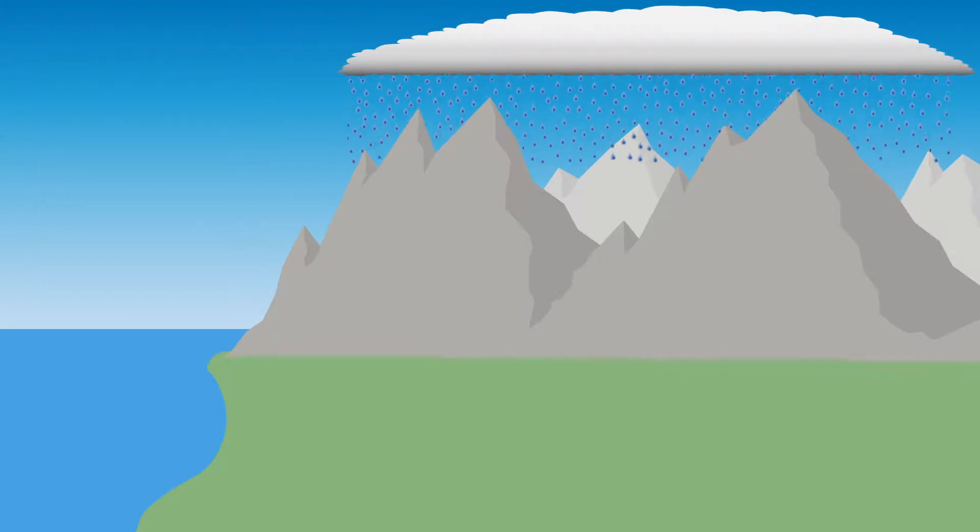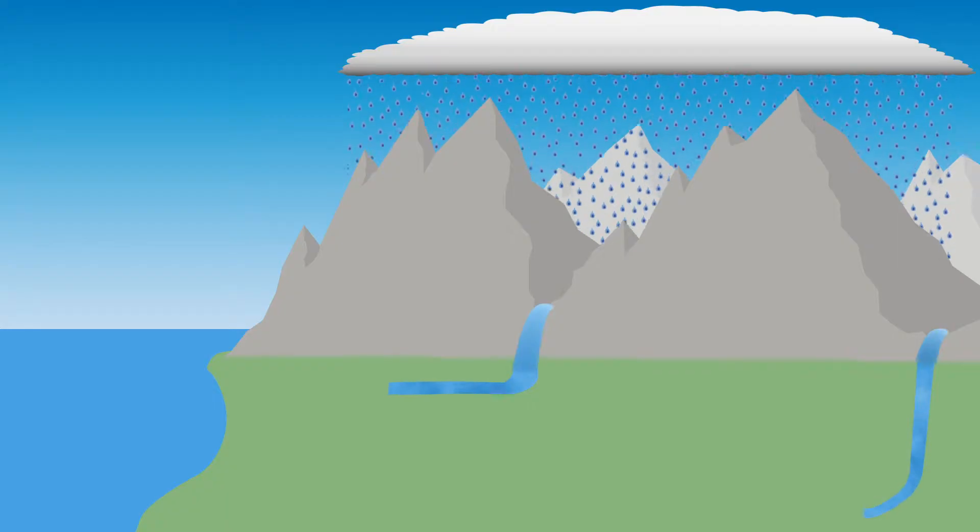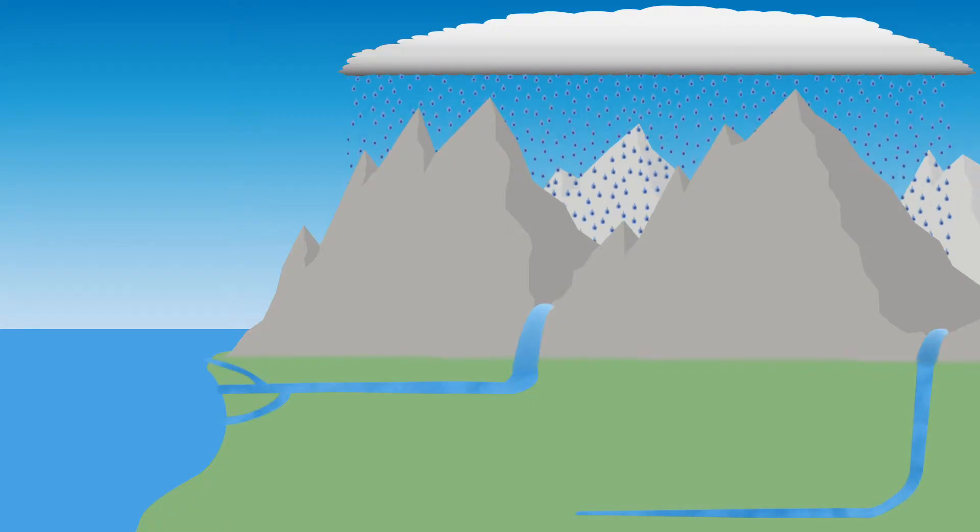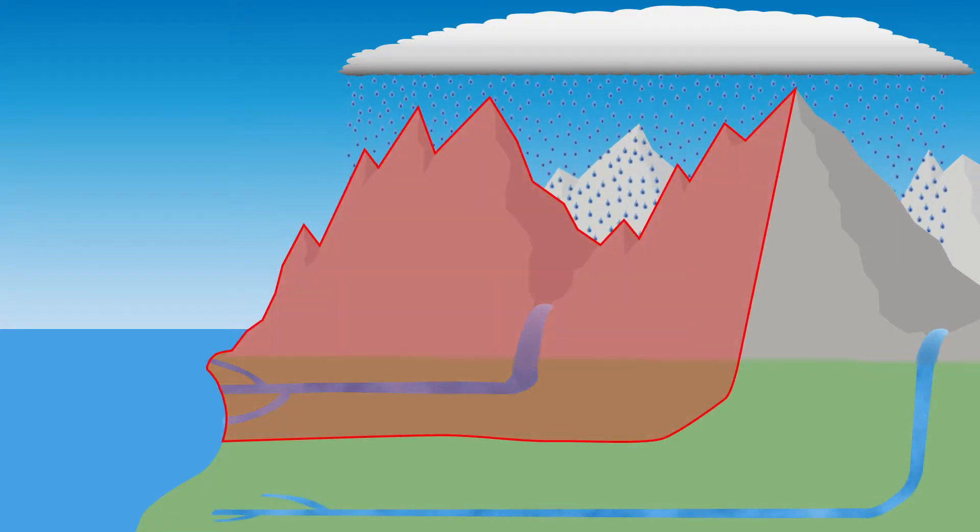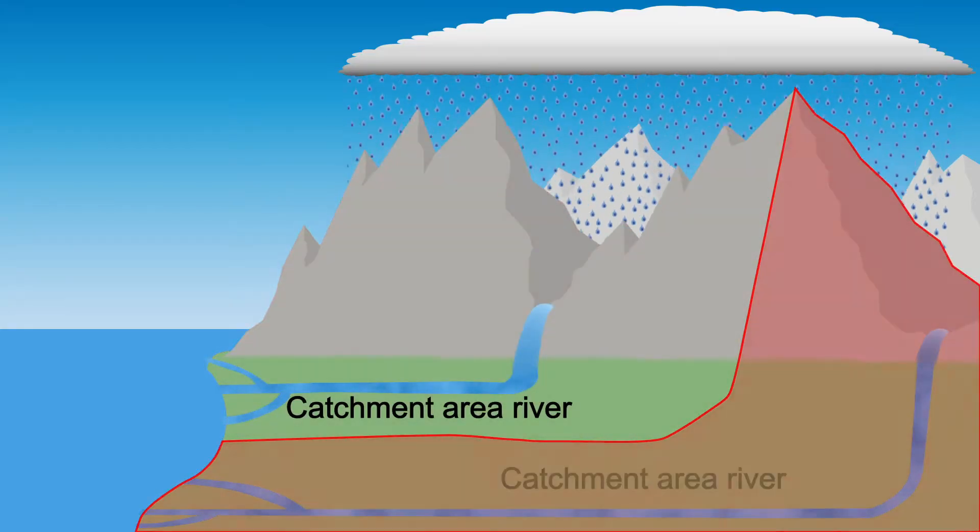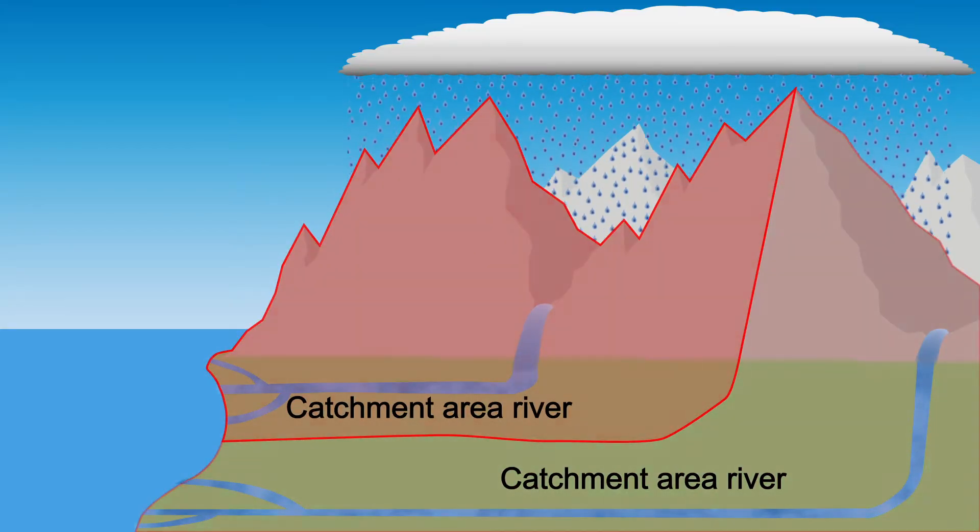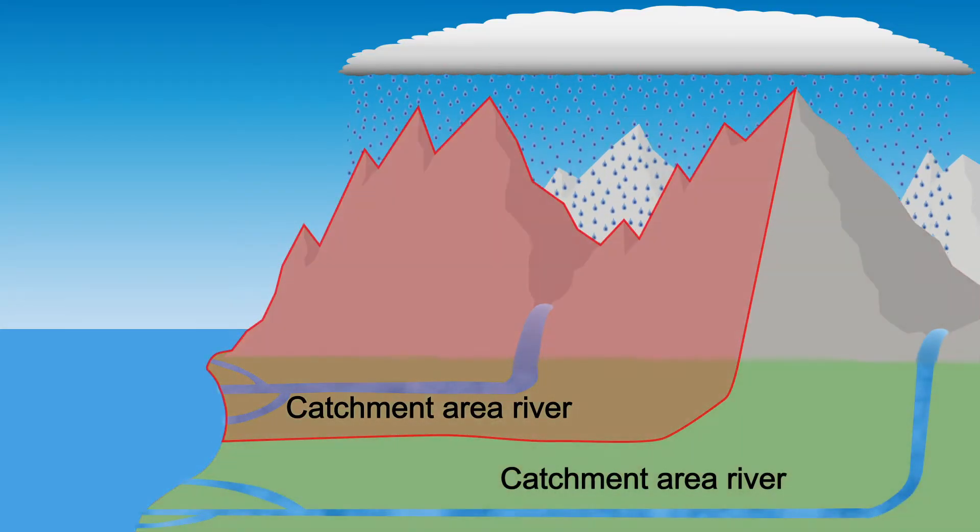When it rains, the water is transported back to the sea by rivers. The area whose water is drained by the same river is called a catchment area. Two different rivers therefore have different catchment areas. The watershed marks the boundary between two catchment areas.